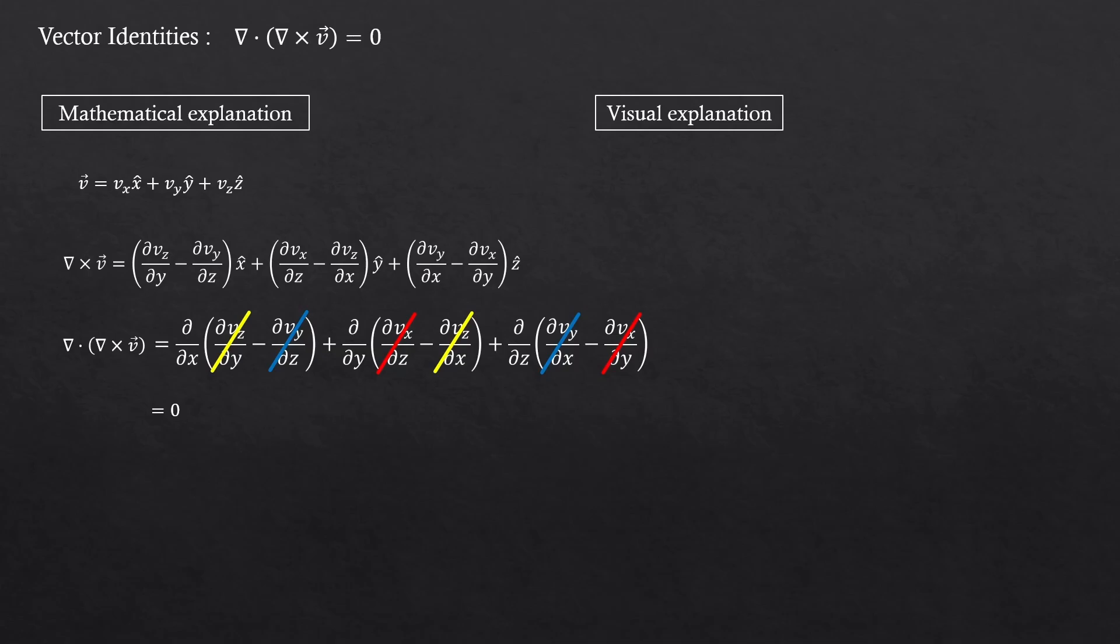Anyway, for this vector identity, we got zero again. Since we proved this using a vector that has a generic form, this vector identity should work for any existing vector. And this one is pretty easy to explain visually.